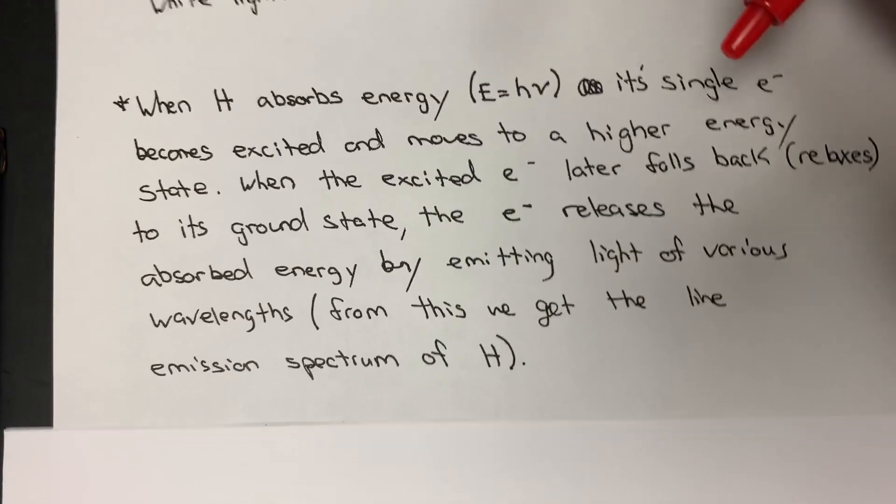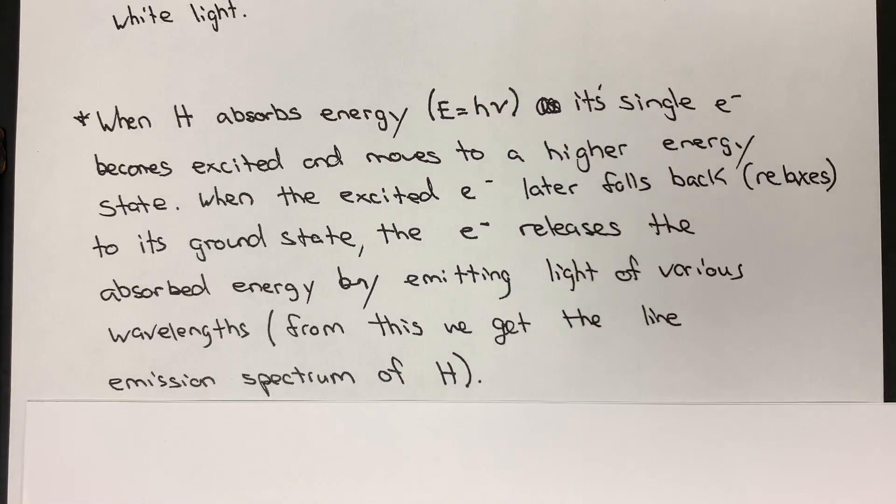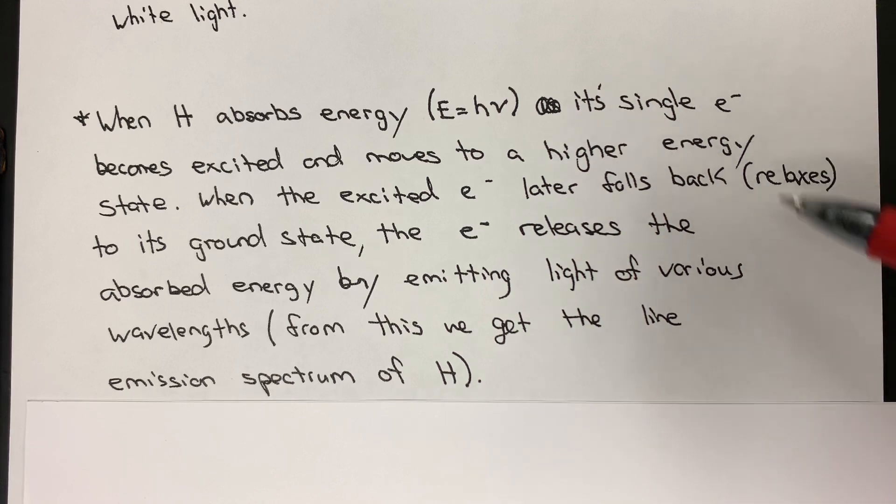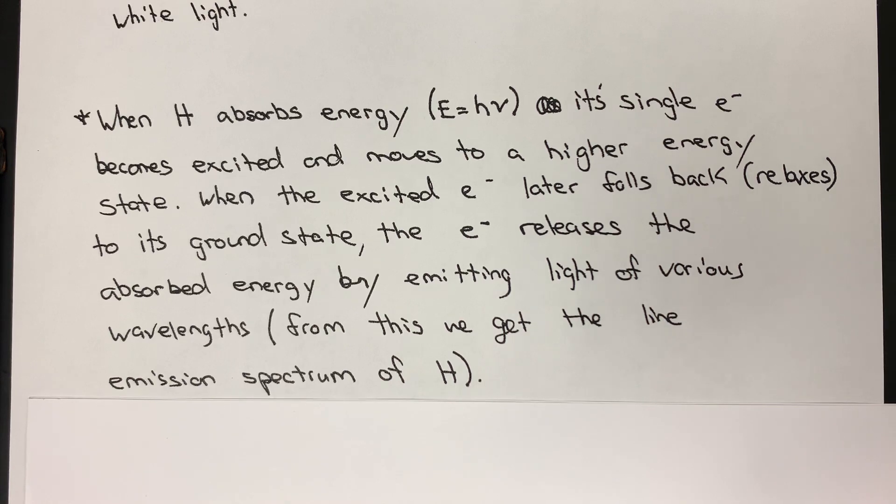When we talk about hydrogen, obviously the simplest atom to deal with and the one that Bohr used as far as developing his model and his mathematics, whenever hydrogen is absorbing energy, that single electron is going to become excited and that can move to a higher energy state - some other principal quantum number. It can go from one to two to three to four, and so on.